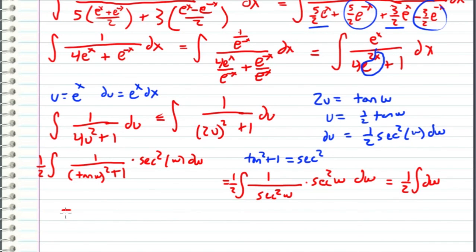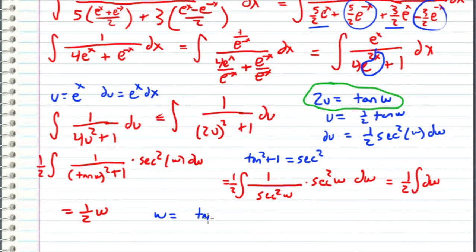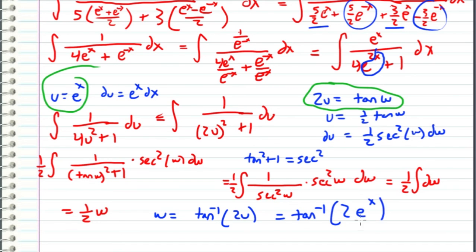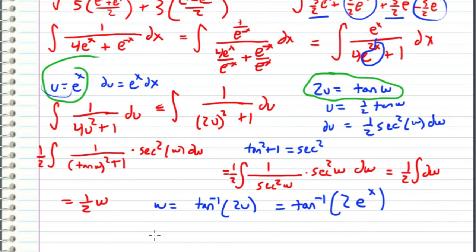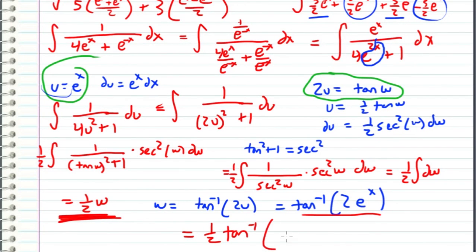We can easily integrate this: it equals (1/2)w. Now we need to find w. Recall we set 2u = tan(w), so solving gives w = arctan(2u). Substituting back u = e^x, we get w = arctan(2e^x). Plugging w back into the expression, the final answer is (1/2) · arctan(2e^x) plus a constant.